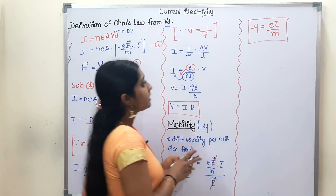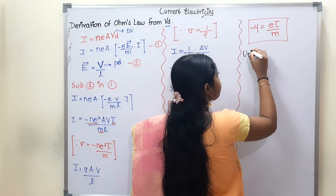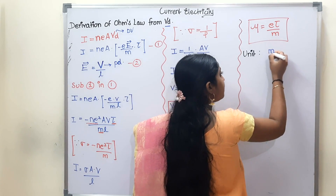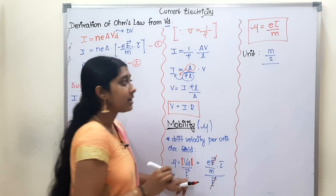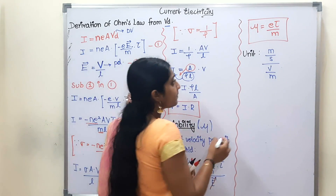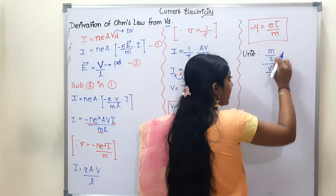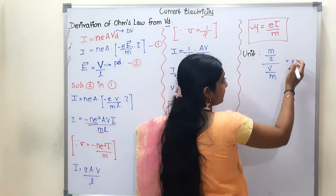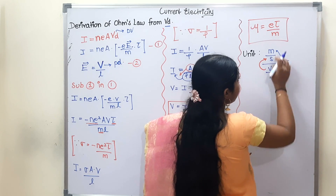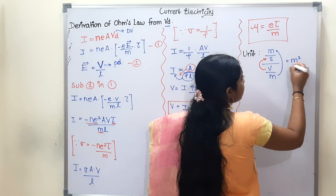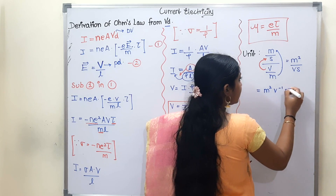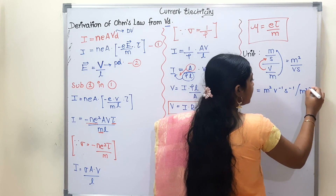Now for the unit of mobility: drift velocity has units of meters per second, and electric field has units of volts per meter. Dividing these, the meters cancel, giving us units of m² per volt-second, written as m²·V⁻¹·s⁻¹.